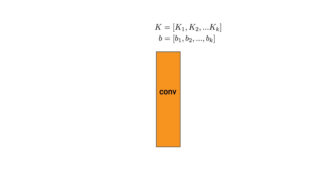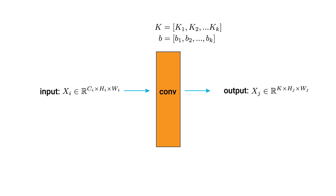To understand guided backprop we're going to start with the standard backpropagation procedure for a single layer in a convolutional neural network. This consists of a set of kernels K and biases B. During the forward pass the input to the layer will be a set of feature maps or an input image, and the output is also a set of feature maps. During the backwards pass, grad_in is the gradient of the loss with respect to the layer's input, and grad_out is the gradient of the loss with respect to the layer's output. We have labelled these using the same variable names as the hook functions you'll see in the Python lesson, to help connect the theory to the practical application.